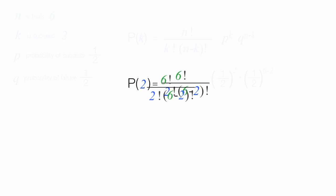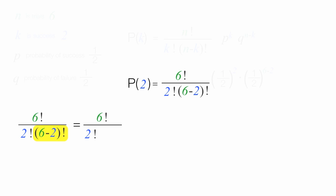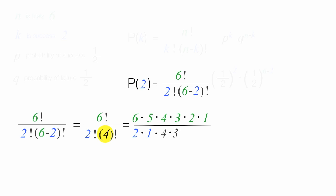I'm going to work on this part of the equation first. I have six factorial divided by two factorial, and six minus two is four, so four factorial. This equals six times five times four times three times two times one, divided by two times one, times four times three times two times one. I'll cancel out the four-three-two-one terms, leaving six times five divided by two, which equals 15.